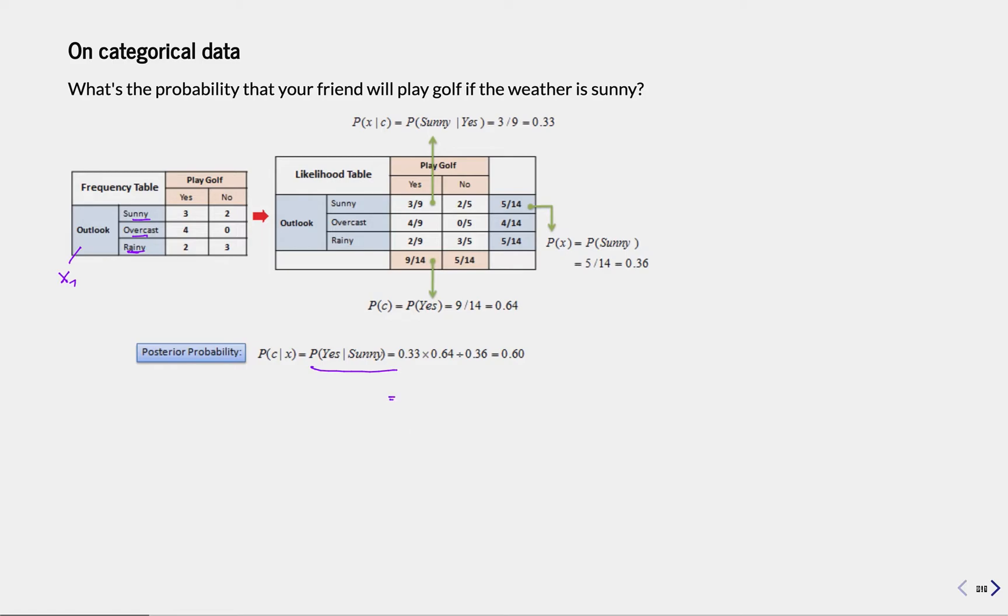I want to predict that my friend wants to play golf given that it's sunny. I look outside, I see it's sunny, I will now compute the probability that my friend will say yes. To do that, I need to compute the probability that it's sunny given yes times probability that my friend says yes divided by the probability that it is sunny. This is my table of frequencies. I've asked my friend 14 times, and of these nine times my friend said yes. Three times it was sunny, four times it was overcast, two times it was rainy. From this I can compute my likelihoods.